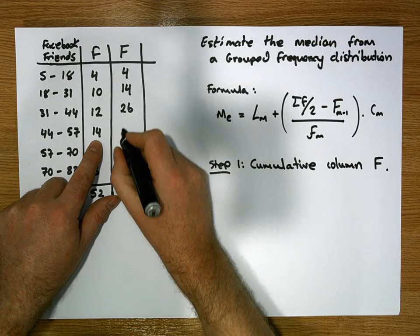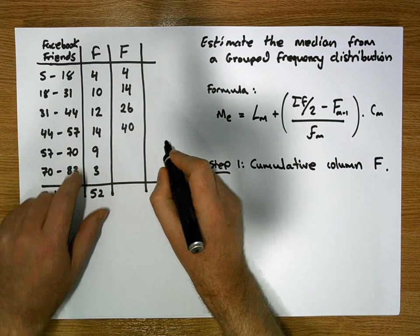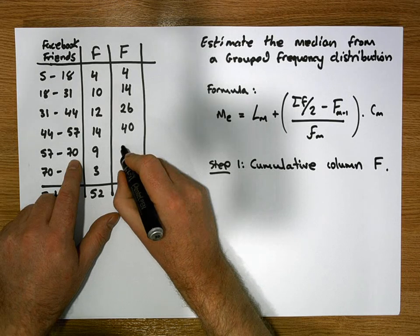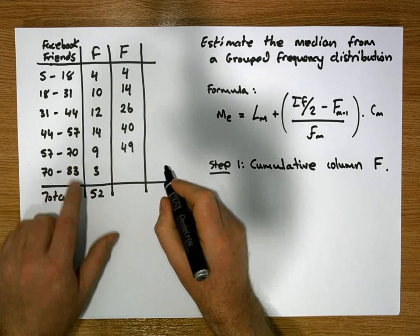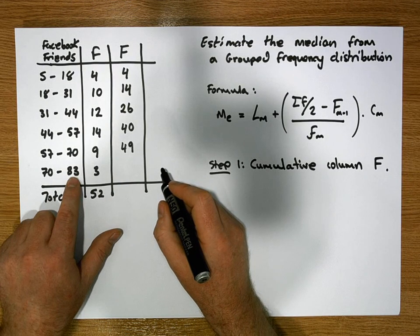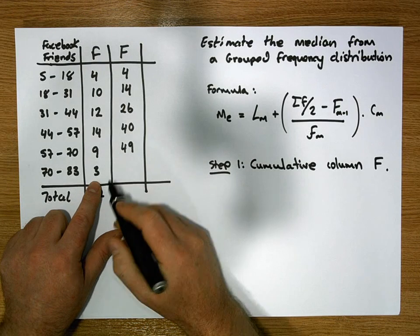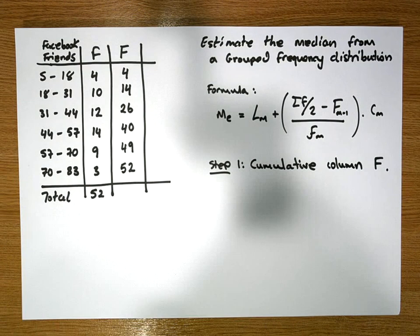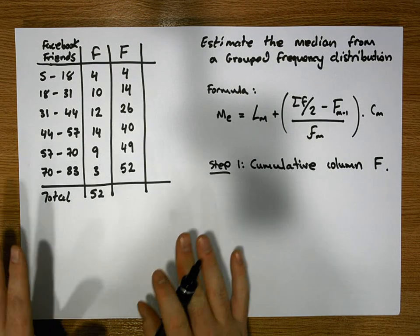How many are less than 70? We have the 9 and the previous 40, which gives us 49. And how many observations are less than 83? We have the sum of all the observations, or 3 plus 49, which gives us 52. So once we've figured out the cumulative values, what we know is that the median should split the data set up into two equal portions.